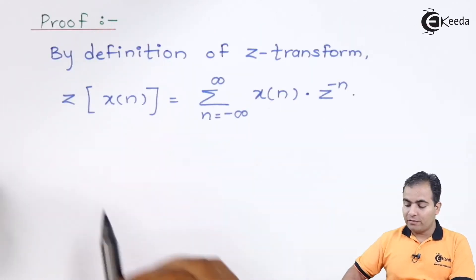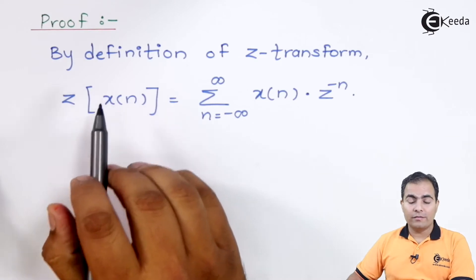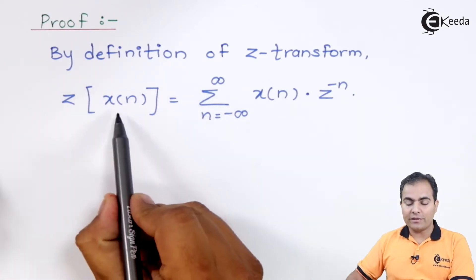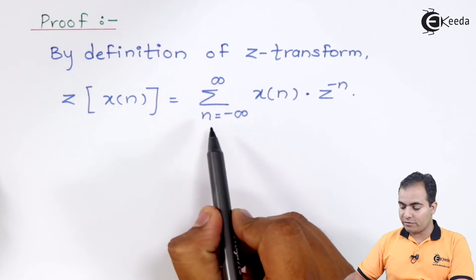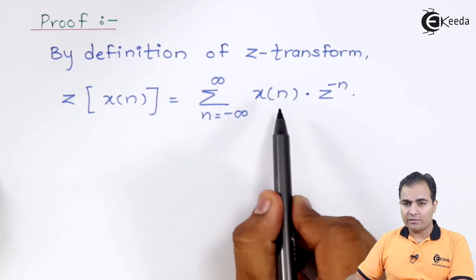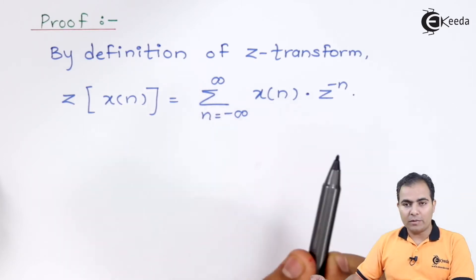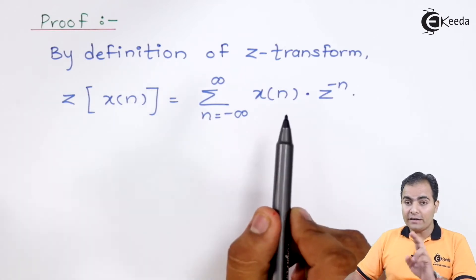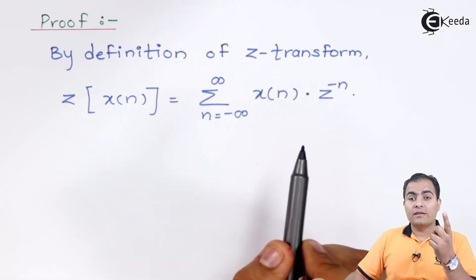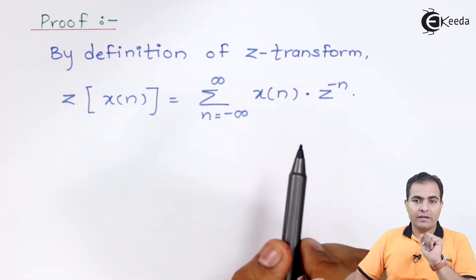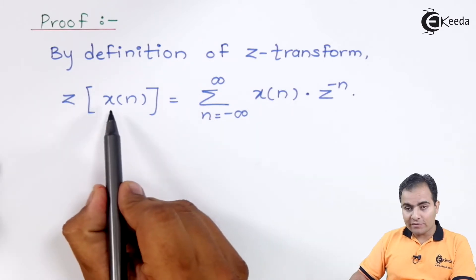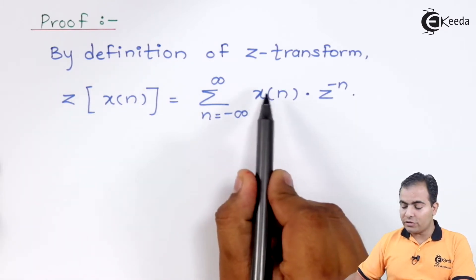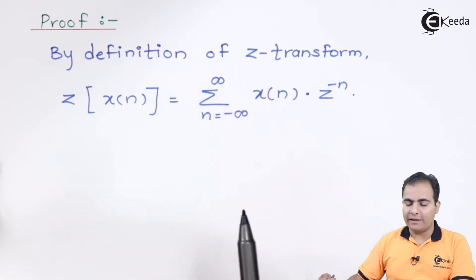Now we will prove it. First we use the definition of Z-transform: X(N) is nothing but the summation from N equals minus infinity to infinity of X(N) into Z to the power minus N. The integration property is also known as division by N, so if X(N) is replaced by X(N)/N, then X(N) on the right hand side is also replaced by X(N)/N.